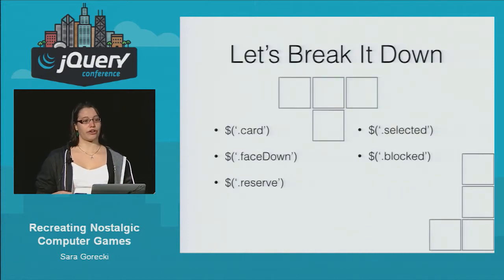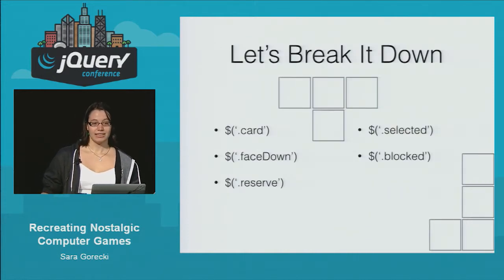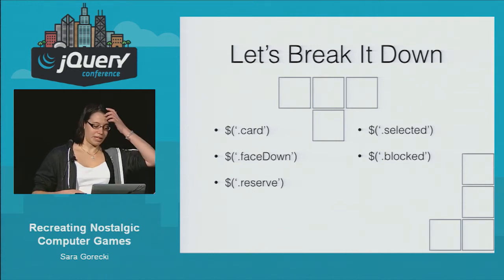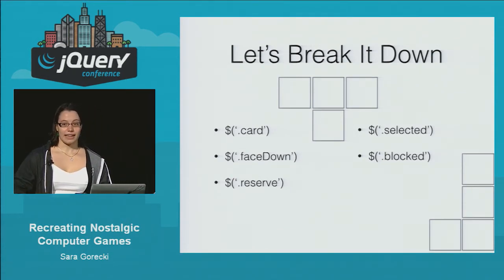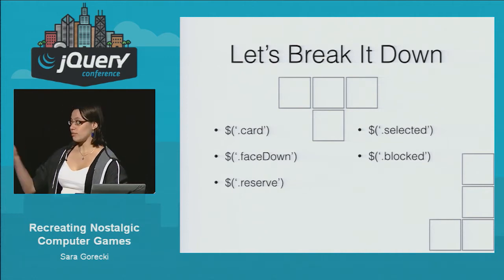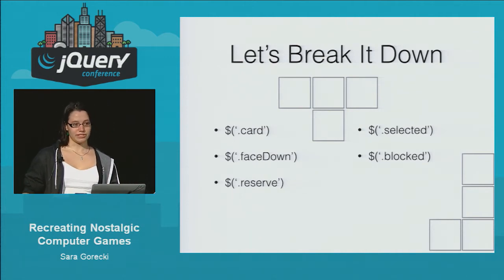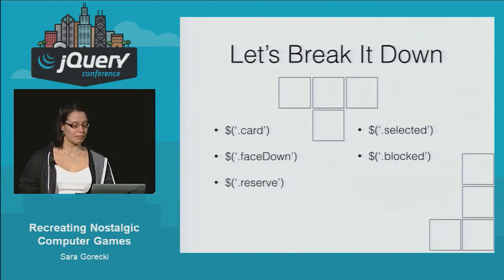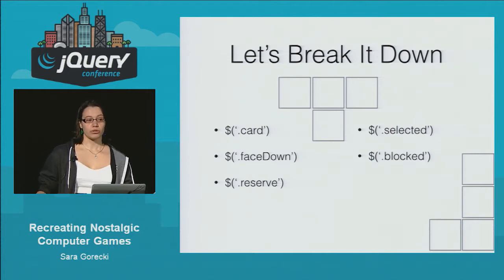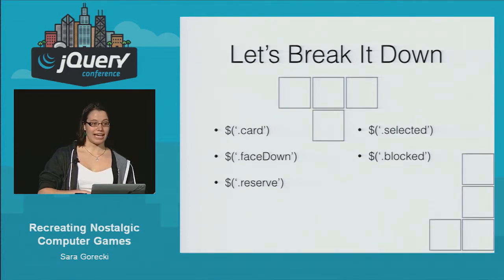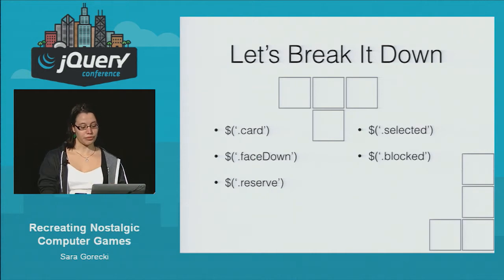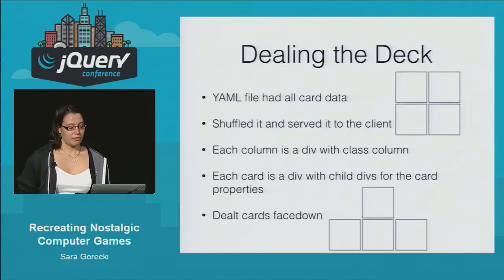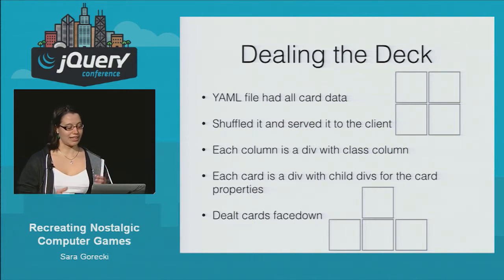I basically gave each card a card class, which made it really easy to target and manipulate them. Based on the state that each card had, I would also give it one of the other state classes. I was very meticulous about charting out which cards would have which class at which time — for example, a card that's face down will lose the face-down class once the card immediately on top of it is removed. This game had a very thin back end, and it just read all the card data from a YAML file and served it straight up to the client, with everything else handled in the DOM.